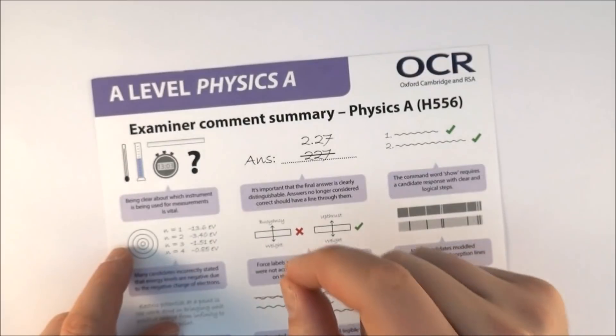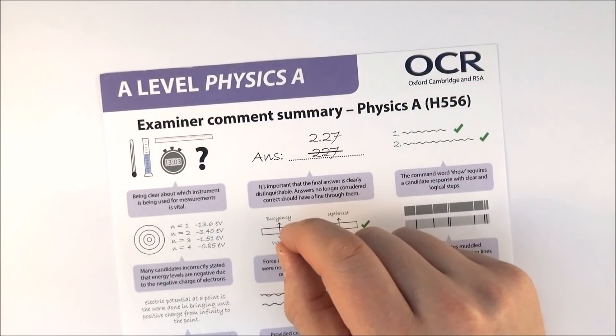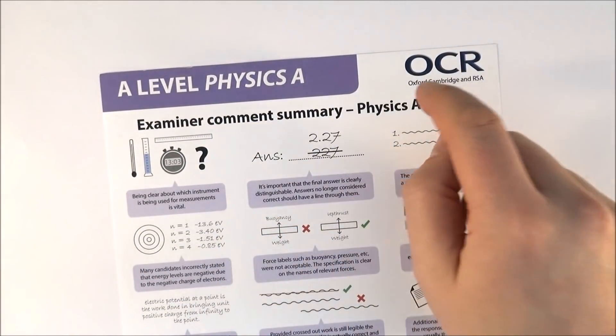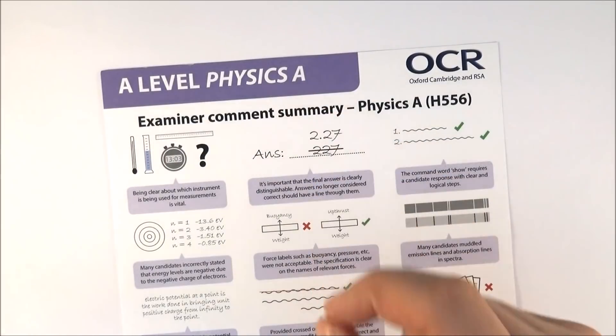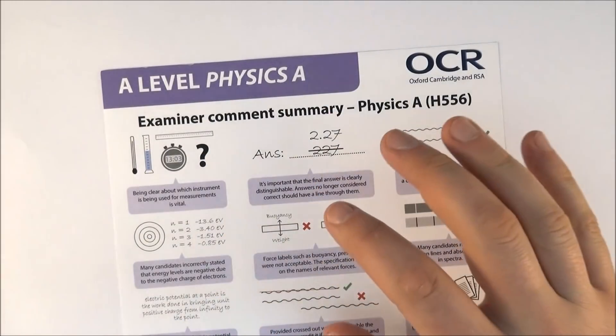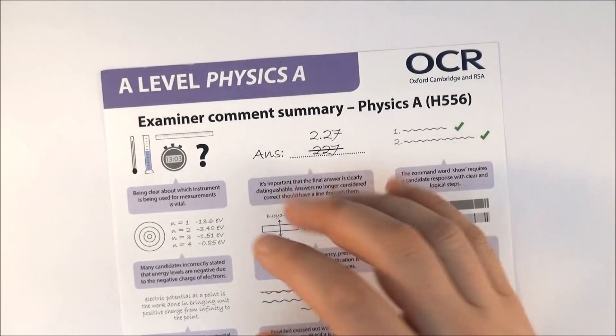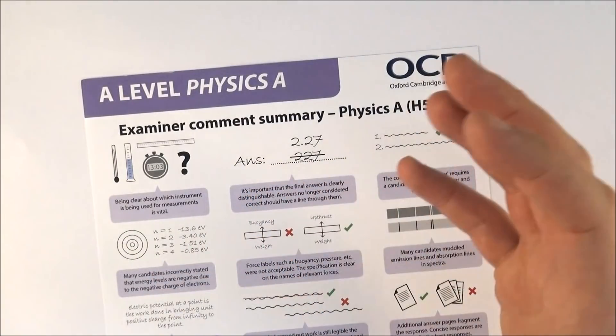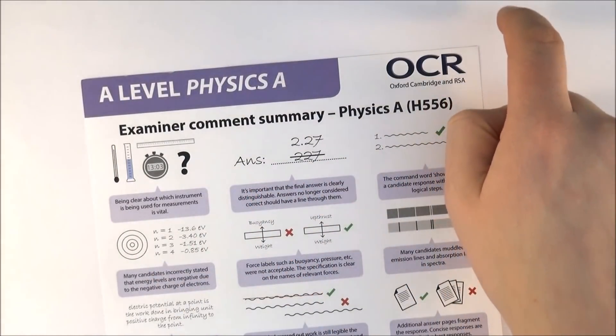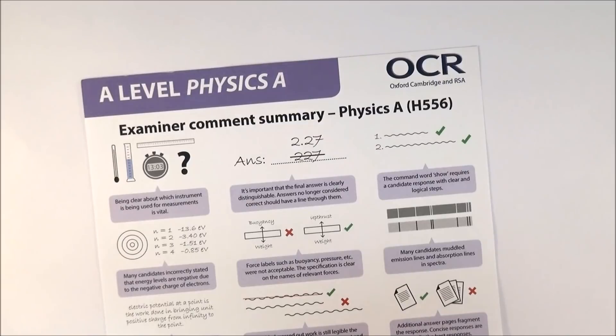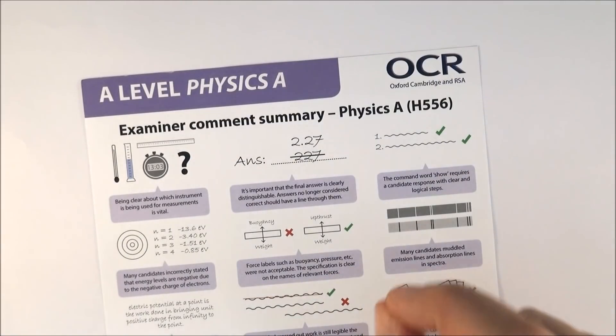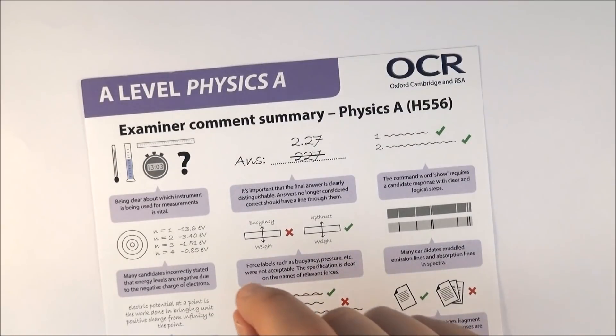These are the top 10 errors that students made last year in their physics exams. Although this is written for OCR specification A, these are the kind of mistakes that all students make for every single physics exam board. I've got a more generic video linked up here about general exam technique, but this video is going to look at some of the key mistakes that you should not repeat.